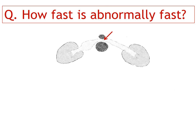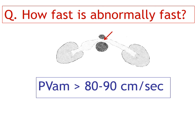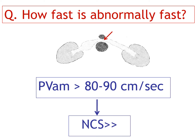So to the question of how fast is abnormally fast, we have an answer: if peak velocity at the aorto-mesenteric portion is higher than 80 to 90 cm/sec, we can strongly suspect nutcracker syndrome.